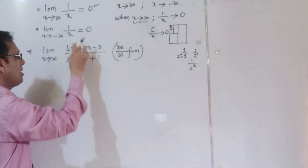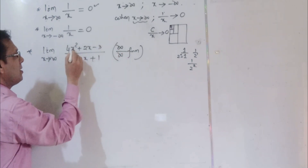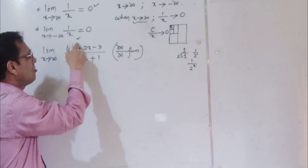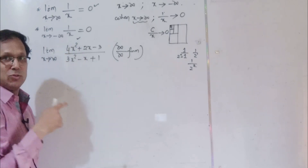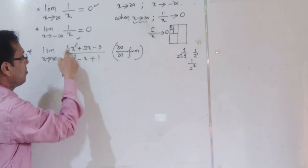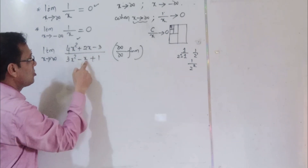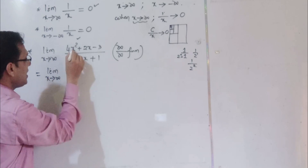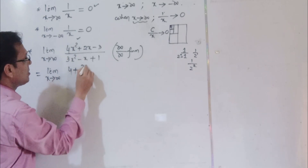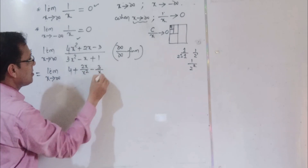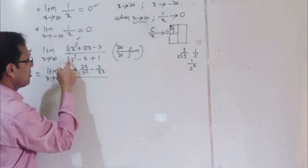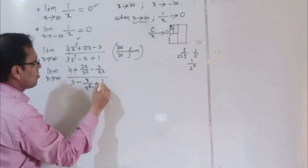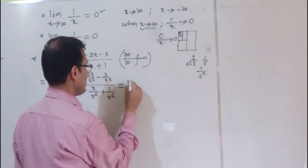In the infinity by infinity form, we divide the numerator and denominator by the highest degree of x. The highest degree here is x². So we divide each term: the numerator becomes (4 - 2/x + 3/x²) and the denominator becomes (3 - 1/x + 1/x²), after dividing through by x².